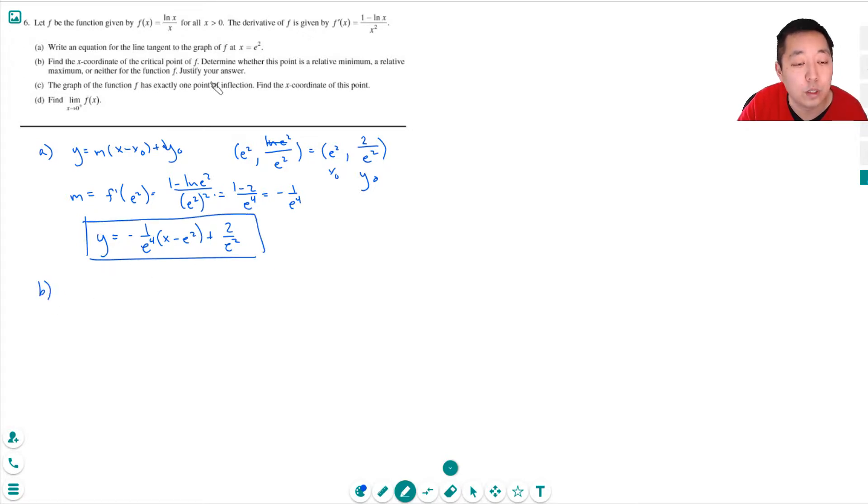Part b. Find the x coordinate of the critical point of f. Determine whether this point is a relative minimum, maximum, or neither for the function f. Justify your answer. Critical point of x is when it's equal to 0 or undefined. Right? Now, 1 minus ln x over x squared. This is equal to 0 only when the top is equal to 0. 1 minus ln x equals 0. Or ln x is equal to 1. Take e to both sides to cancel out the ln. So then I have x is equal to e to the 1. So this is one critical value. The other critical value is x equals 0. But x equals 0 doesn't exist on this function. Because when I plug in 0, I can't do ln of 0 over 0. So this is not really a point that touches the function. Even though the derivative is undefined, it's really undefined because the function is undefined there.